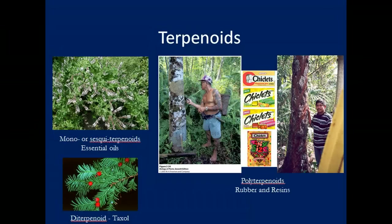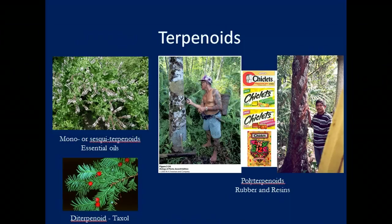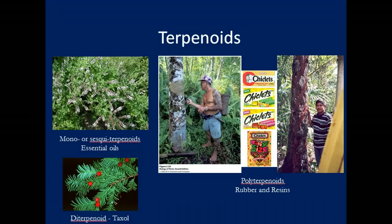An example of a sesquiterpenoid is essential oils. Plants like basil, mint, oregano, parsley, and cilantro — if you crush them and rub them between your fingers, they feel oily because the plant is producing terpenoids in the form of oil in their leaves. These oils function to deter herbivores. If you eat a basil or mint leaf, the first thing you taste is bitter, and most organisms avoid bitter things. Plants produce these essential oils, which we love for cooking, but which most organisms find repulsive.